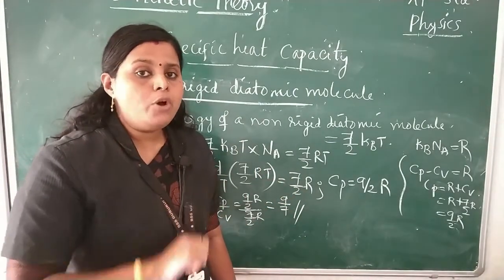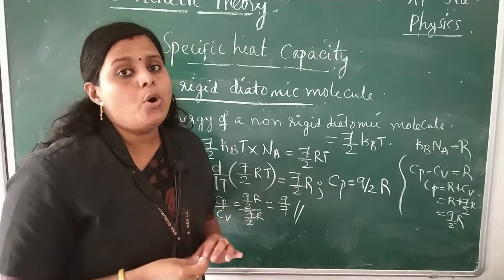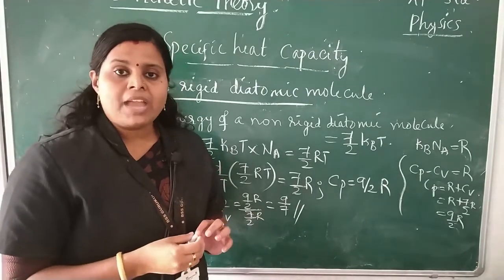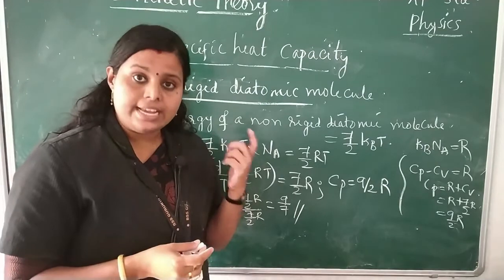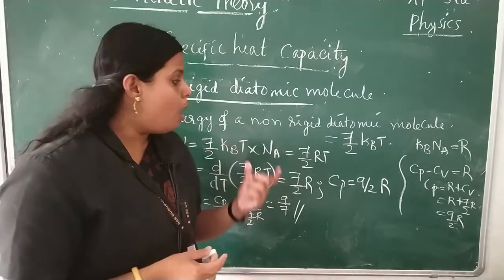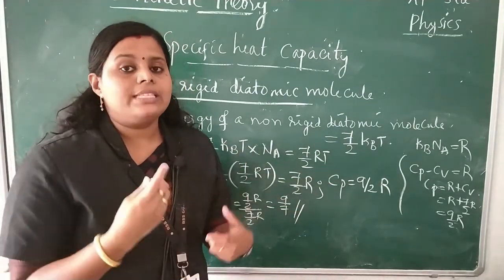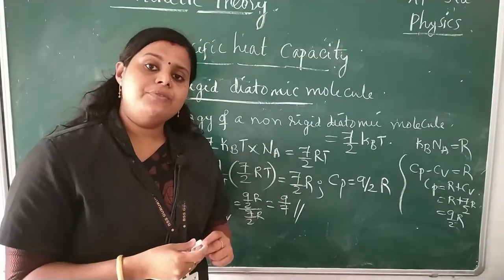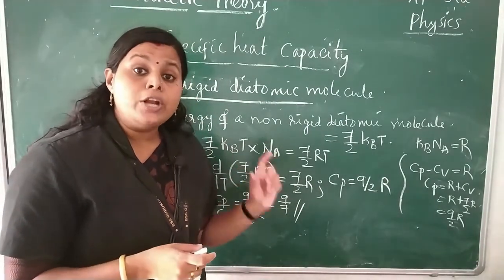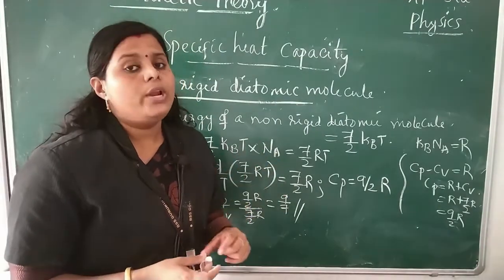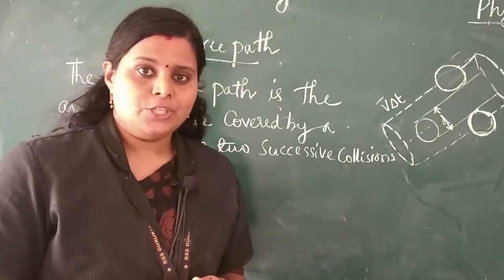One more case remains — the non-rigid polyatomic molecule. Finding the values of C_P, C_V, and γ for a non-rigid polyatomic molecule is left as homework for you. Now let's get into the next topic.